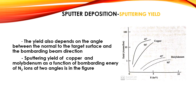Sputtering also depends on the angle between the normal to the target surface and the bombarding beam direction. The sputtering yield of copper and molybdenum as a function of bombarding energy of nitrogen ions at two angles is shown in the figure, with both copper and molybdenum plotted with respect to yield and energy.